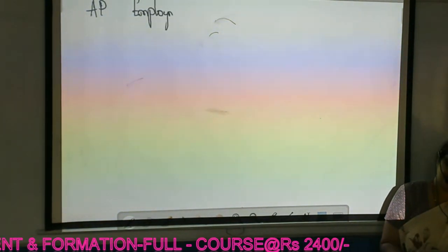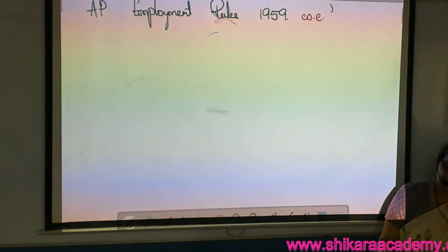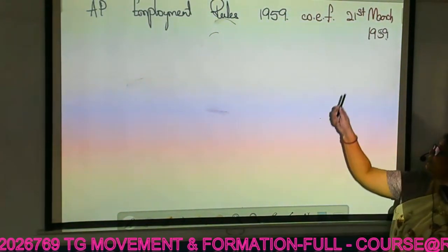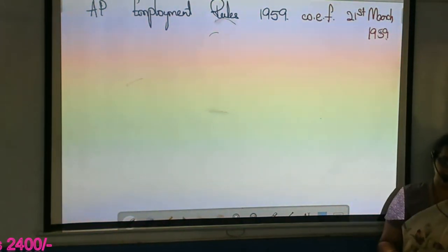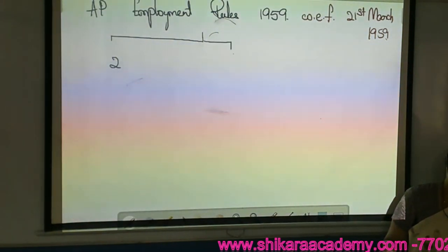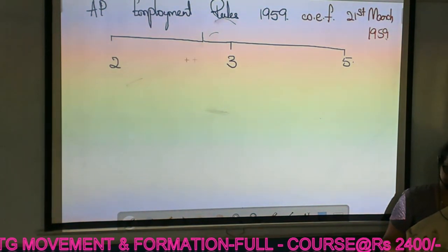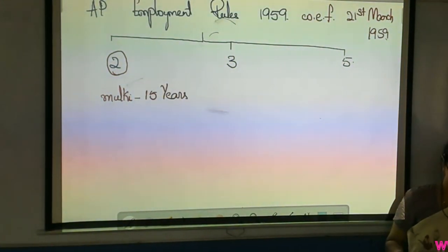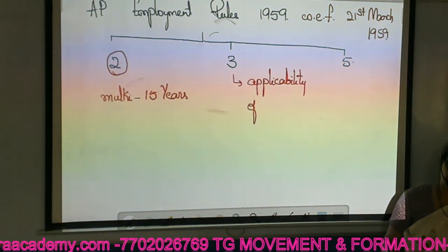In this process, Parliament made the AP Employment Rules 1959, with effect from 21st March 1959. This was extended again in 1964 and 1969. We discussed three sections: Section 2 stated that Mulki eligibility would be 15 years as per the old Mulki rules; Section 3 talked about the applicability of local reservation; Section 5 said it would be applicable for 5 years and can be extended.